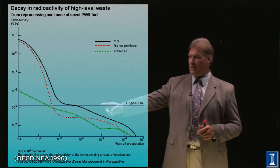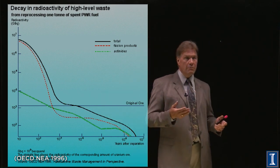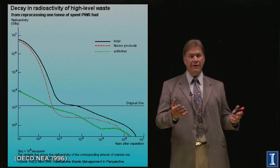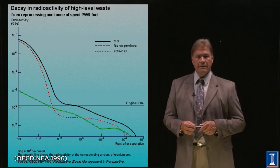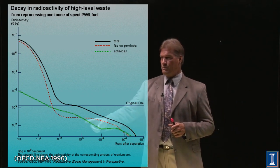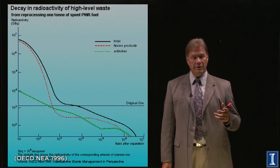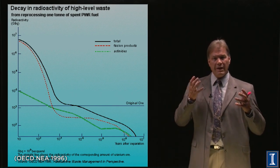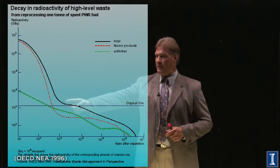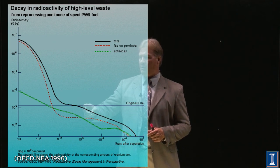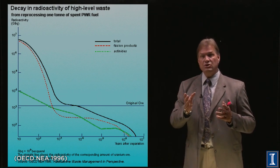The red dashed line crosses the natural ore level at maybe 500 years, which is a long time but not at all outside the scope of our engineering — the pyramids existed a lot longer, and castles in Europe make 500 years seem short. The problem comes with the green line. The green line represents the actinides — the elements heavier than uranium: neptunium, plutonium, on up to americium, californium. These very heavy man-made elements can have extremely long half-lives, so even to get down to 1,000 years is difficult.